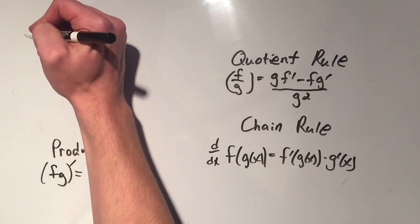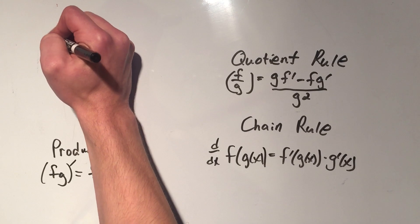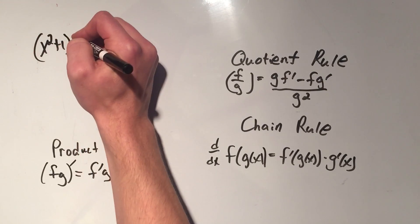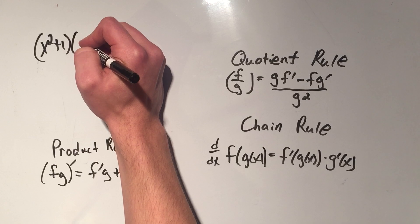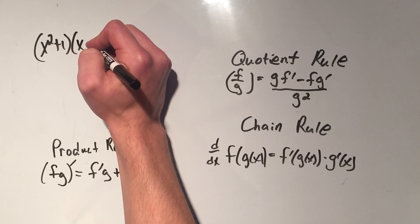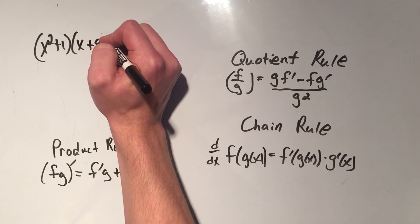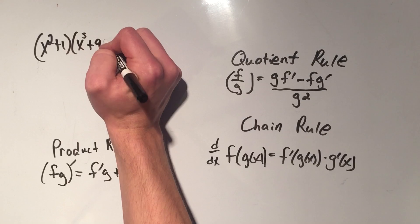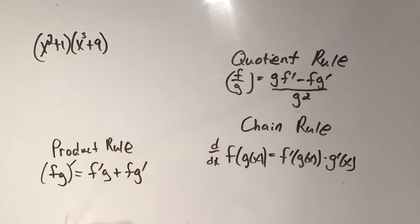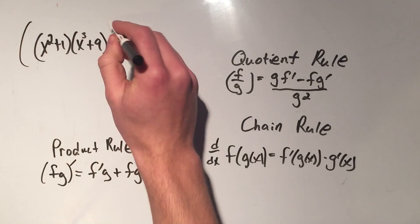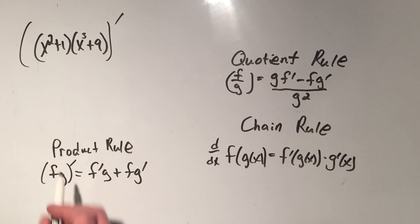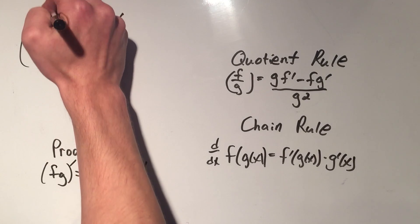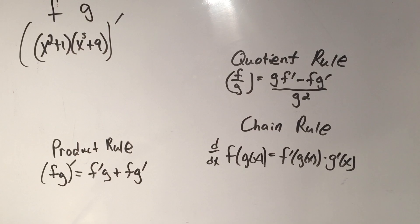Let me show you an example. So if I had x squared plus 1 times x cubed plus 9 — that's a product of two functions. I'll label the first one f and the second one g.